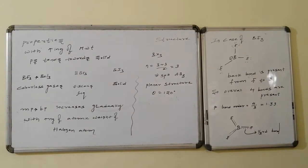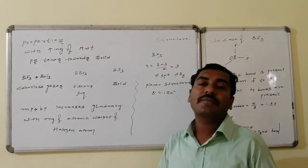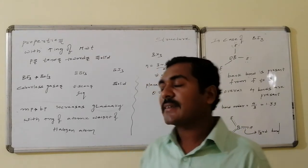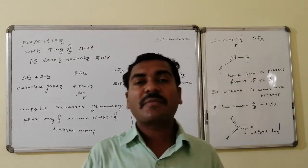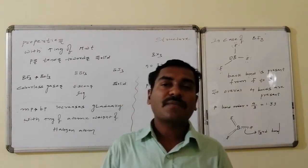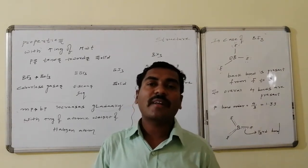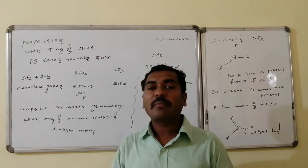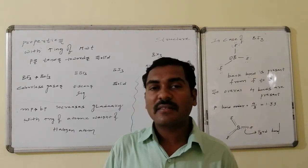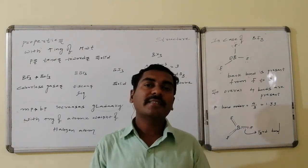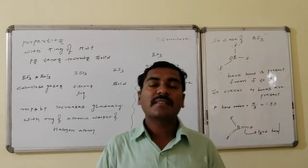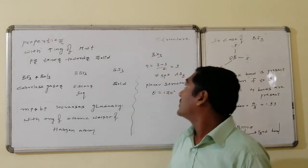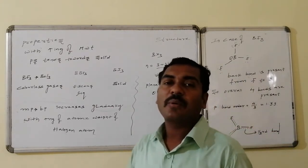General properties of boron halides: with increasing molecular weight — from fluorine to chlorine to bromine to iodine — the intermolecular force of attraction increases with atomic size, affecting physical state. BF₃ and BCl₃ are gases, BBr₃ is a liquid, and BI₃ is a solid at room temperature. Melting points and boiling points also increase from BF₃ to BI₃ as intermolecular forces increase with atomic weight.